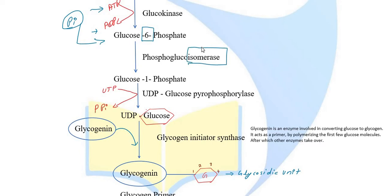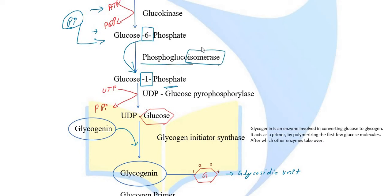In the next step, there is a structural change — the molecular formula remains the same but the position of the phosphate group changes. The phosphate moves from the 6th position to the 1st position, forming glucose-1-phosphate. The enzyme responsible is phosphoglucomutase, an isomerase enzyme.